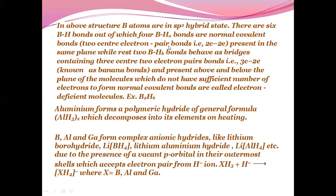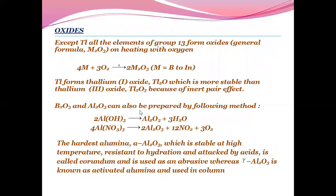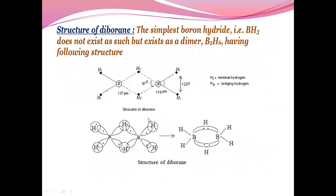The terminal hydrogens are 2-centered, 2-electron systems, whereas the bridge hydrogens are 3-centered, 2-electron systems known as banana bonds. You can see the banana bonds formed between the bridge hydrogens over here. This is the structure of diborane.